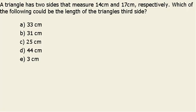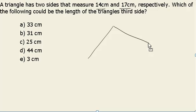A triangle has two sides that measure 14 centimeters and 17 centimeters. Which of the following could be the length of the triangle's third side? We will have to recall that in a triangle with side lengths a, b, and c, the sum of the two shorter legs must always be greater than the longest side.